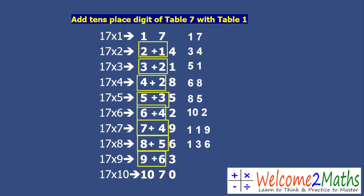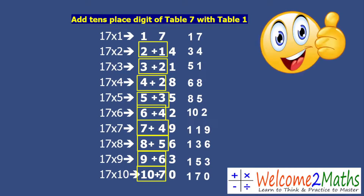17 tens: 10 plus 7 is 17, write 0 as it is — so it's 170. So this is the complete table of 17, and we wrote this table very fast using this method.